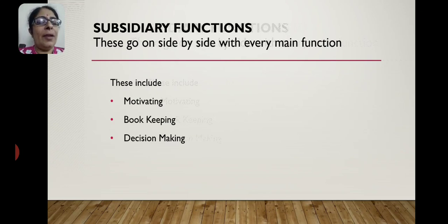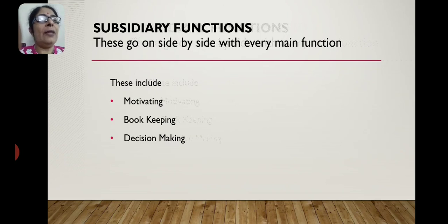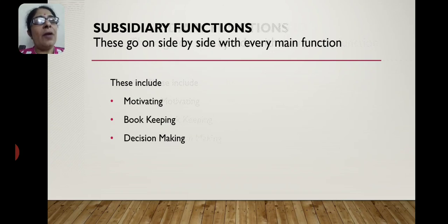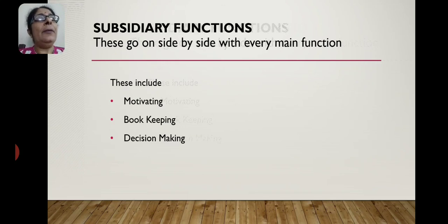Decision making means at every stage you have to make a decision. In the planning function, you decide ki iske baad kya karna hai, pehle yeh karna hai ya woh, kaam kaise karna hai, choti activities mein kaise divide karna hai. In organizing, you decide who gets which duty and how to integrate all the work. In controlling, if your work has deviated from the optimal path, you decide how to bring it back on the right path. So decision making is a subsidiary function that runs through all main functions.